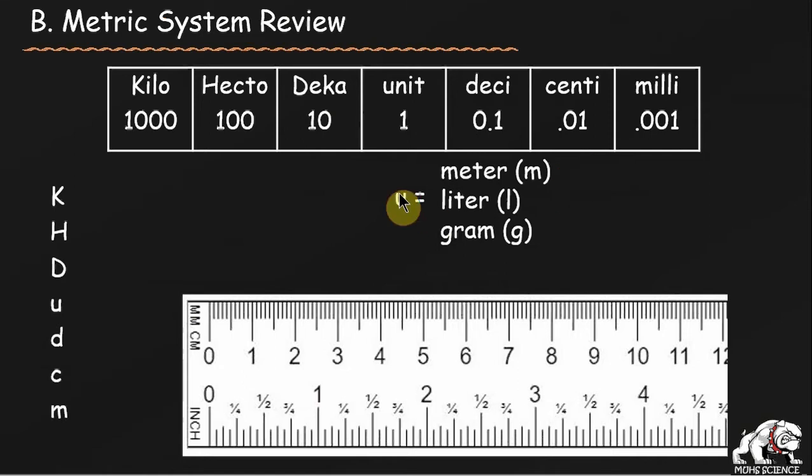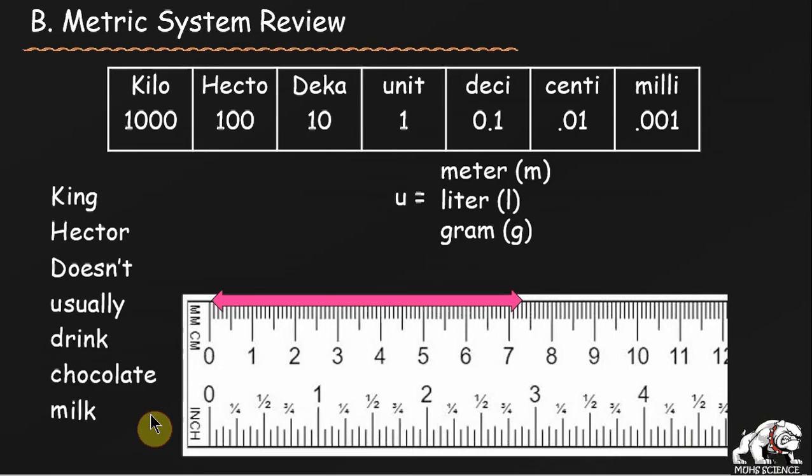I give students an acronym. The acronym I give is King Hector doesn't usually drink chocolate milk. If you can remember King Hector doesn't usually drink chocolate milk, you can remember the order of the metric prefixes.